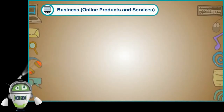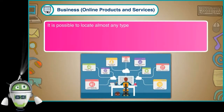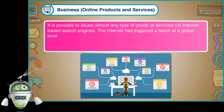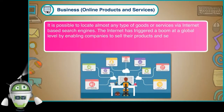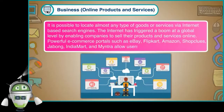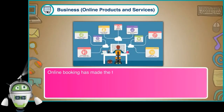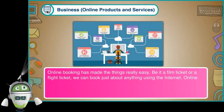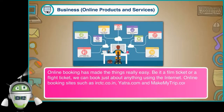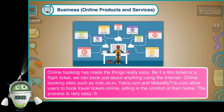Business — Online Products and Services. It is possible to locate almost any type of goods or services via internet-based search engines. The internet has triggered a boom at a global level by enabling companies to sell their products and services online. Powerful e-commerce portals such as eBay, Flipkart, Amazon, ShopClues, Jabong, India Mart, and Myntra allow users to buy products. Online booking sites such as IRCTC.co.in, Yatra.com, and MakeMyTrip.com allow users to book travel tickets online, sitting in the comfort of their home. The process is very easy, fast, and convenient.